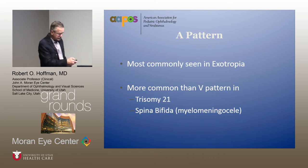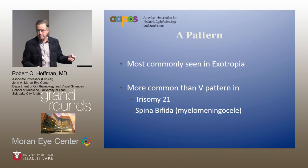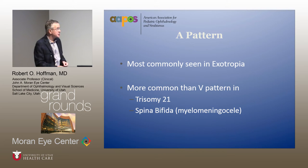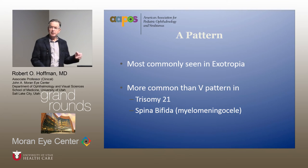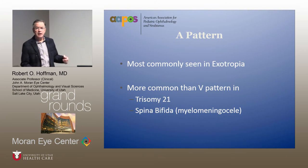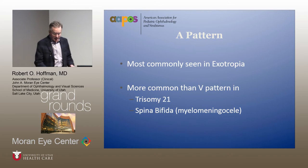A patterns are more commonly seen with exotropia than esotropia. They are also more common than V patterns in Down syndrome and spina bifida — particularly spina bifida with shunted hydrocephalus, where it is very common to see an A pattern.